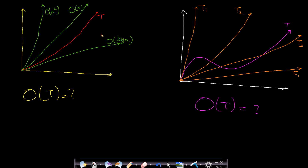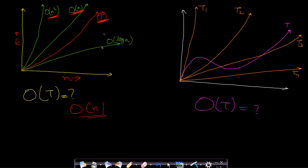Let us look at the left-hand side graph. The red line is the curve made by your program; the x-axis is time and the y-axis is the number of inputs or input size. The upper bounds of this curve t are O(n) and O(n²), but O(n) is much closer to t compared to O(n²). Therefore the tightest upper bound is O(n), and the worst-case time complexity of your program will be O(n).